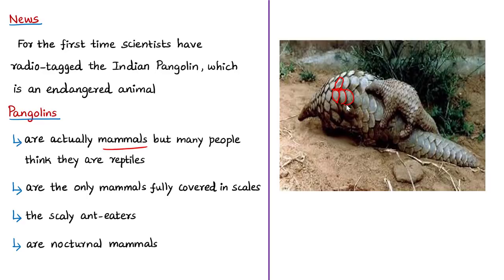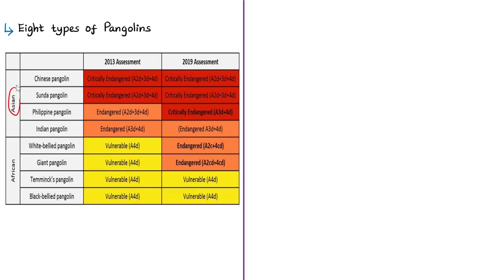Most pangolins are nocturnal, sleeping during the day and searching for food or digging burrows at night. There are eight species of pangolins worldwide — four Asian and four African. Asian species include the Chinese pangolin, Sunda pangolin, Indian pangolin, and Philippine pangolin. African species include the Cape (Temminck's ground) pangolin, white-bellied tree pangolin, giant ground pangolin, and black-bellied (long-tailed) pangolin. Since 2016, all eight species have been transferred from Appendix 2 to Appendix 1 of CITES, providing the highest degree of protection and prohibiting international commercial trade.